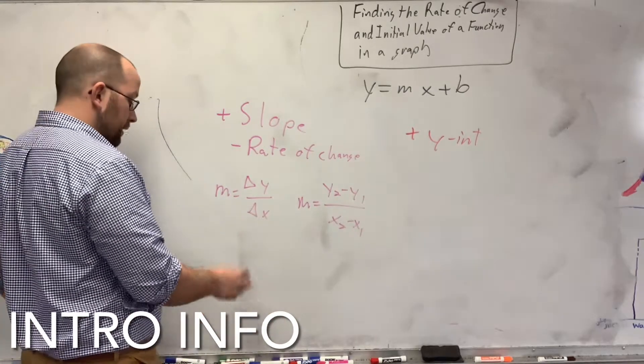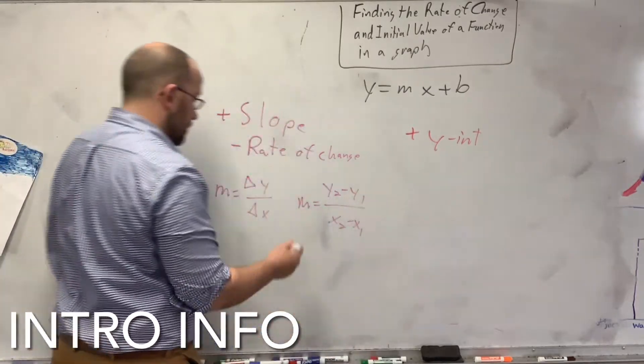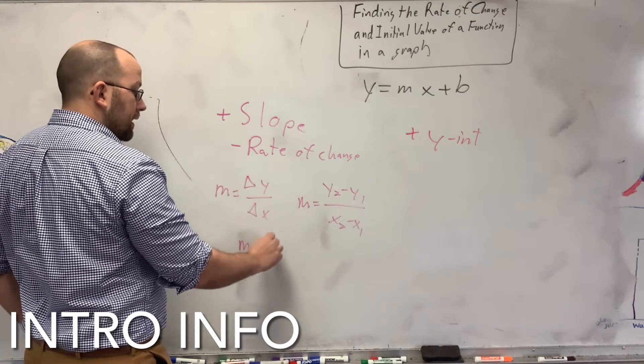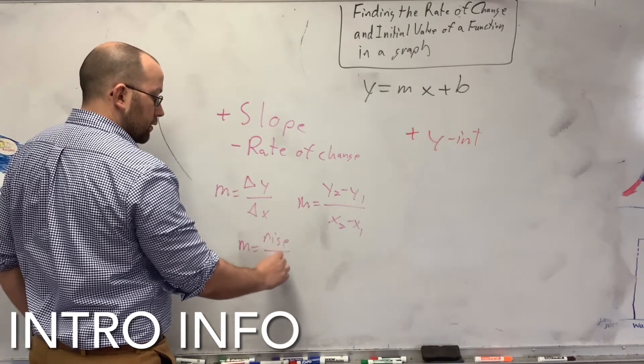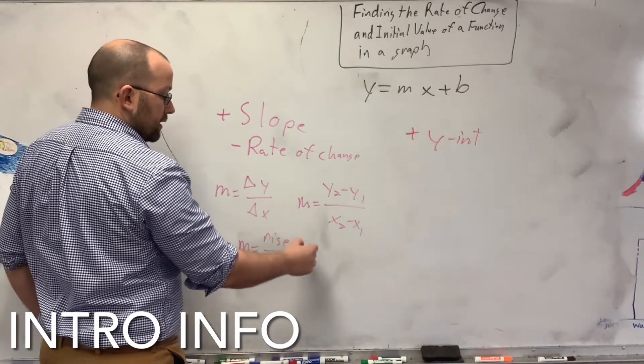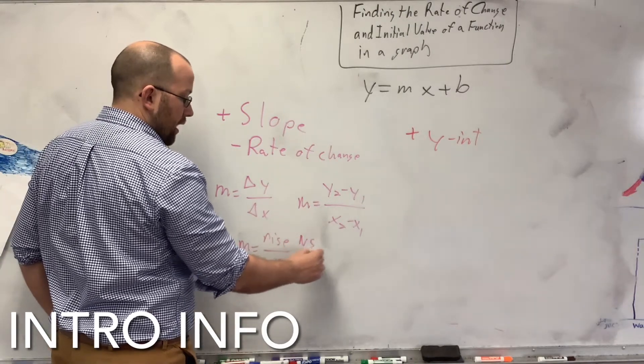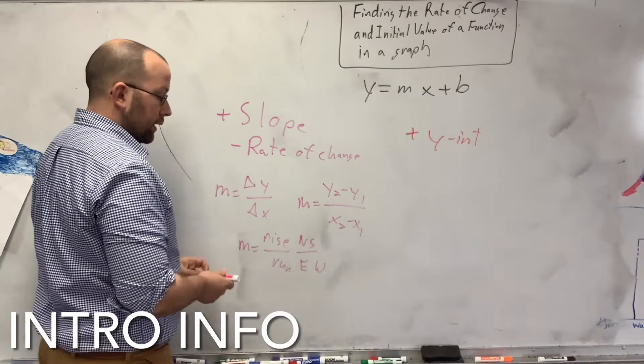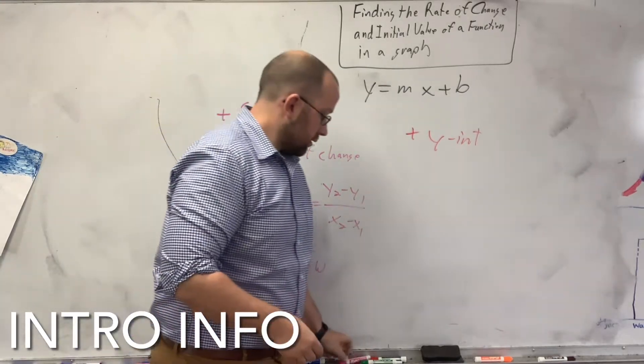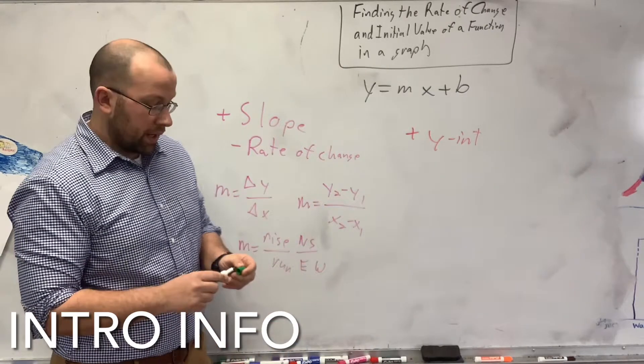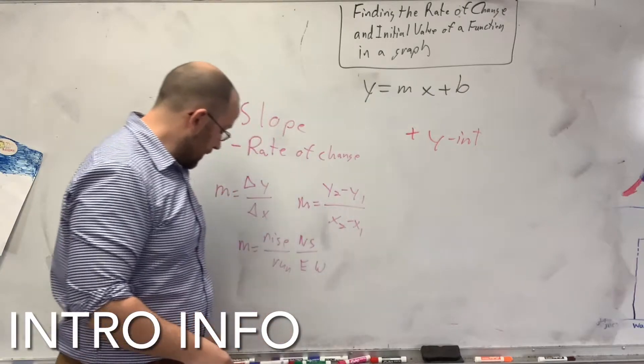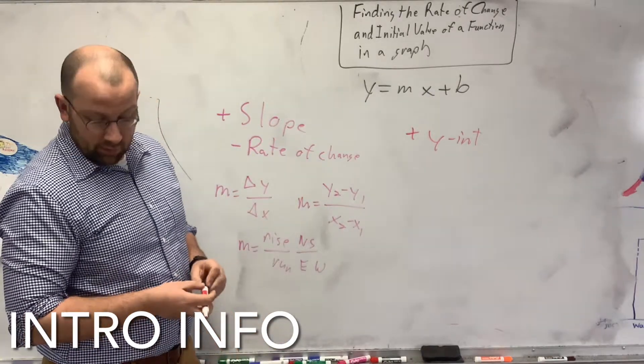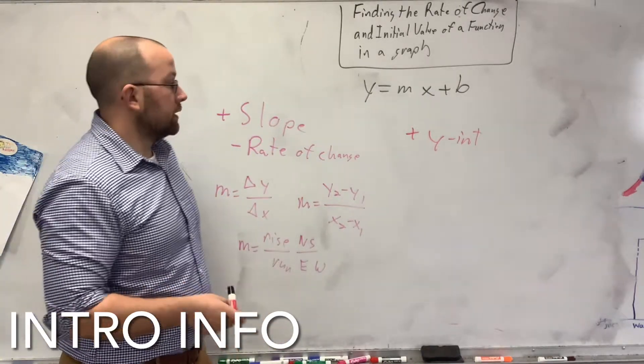When you're graphing, you do rise over run, which means basically how far you go north and south, east and west. There's a nice way to do it with similar triangles. That helps out a lot. We'll get into that in a little bit.